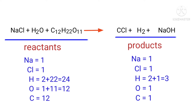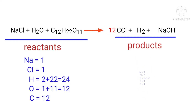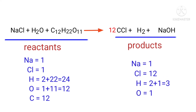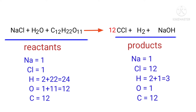In this equation we need to balance the carbon atoms first. To do this we need to put a coefficient of 12 in front of CCl. The carbon atoms are now balanced.